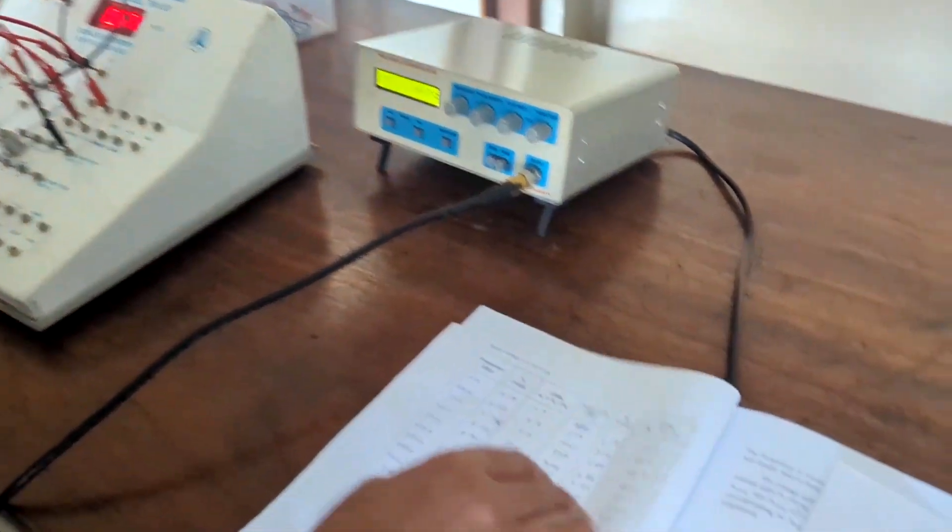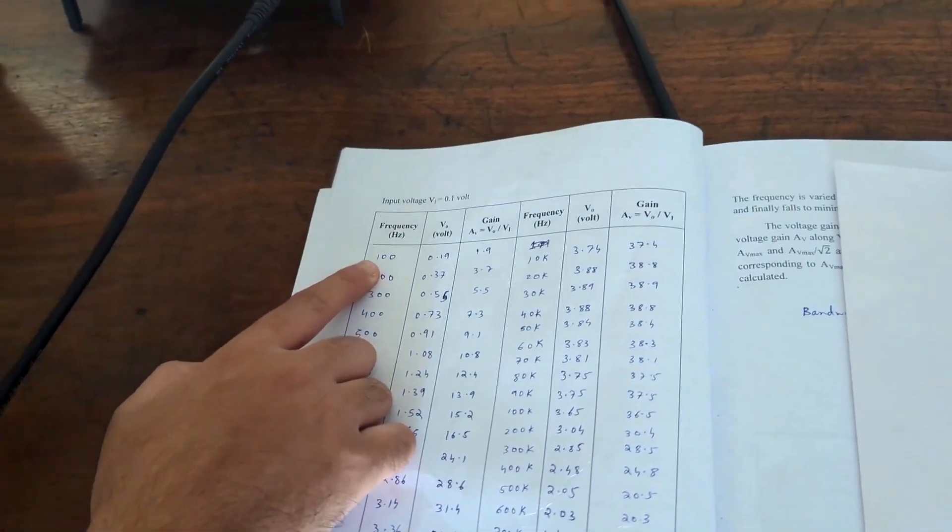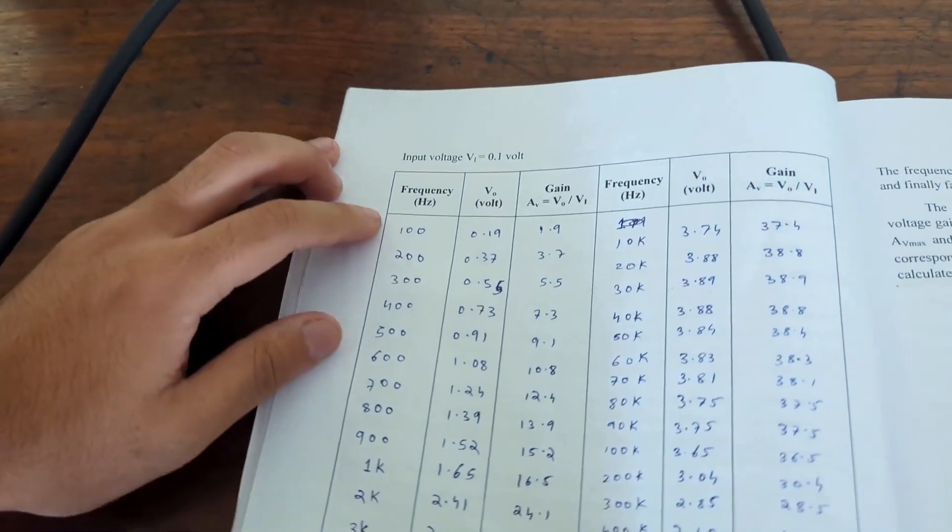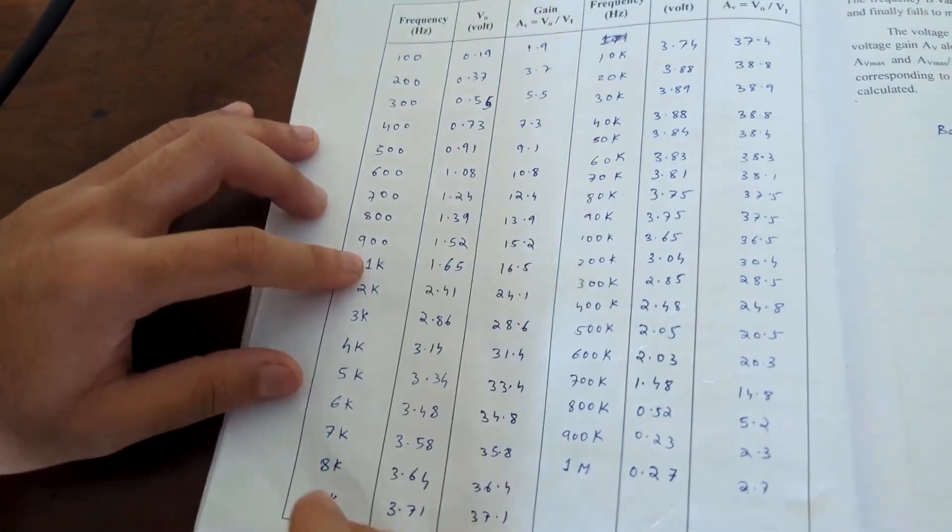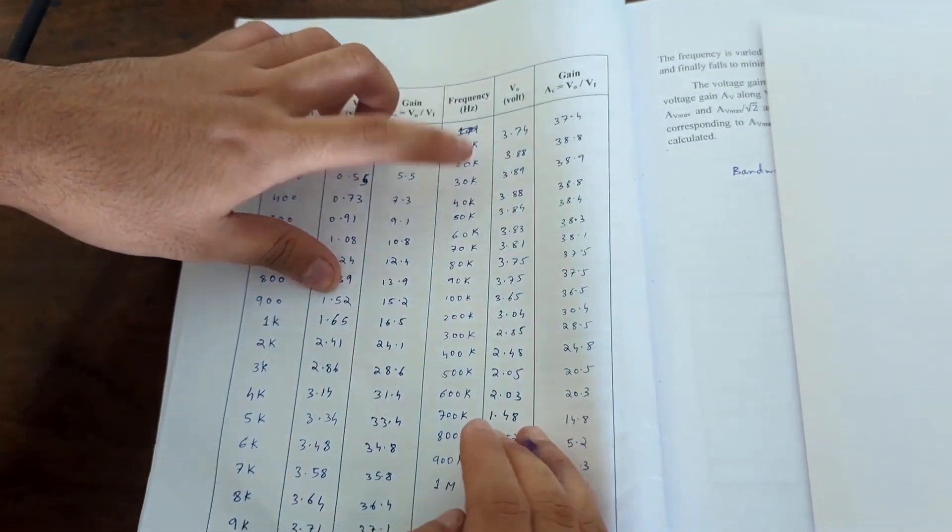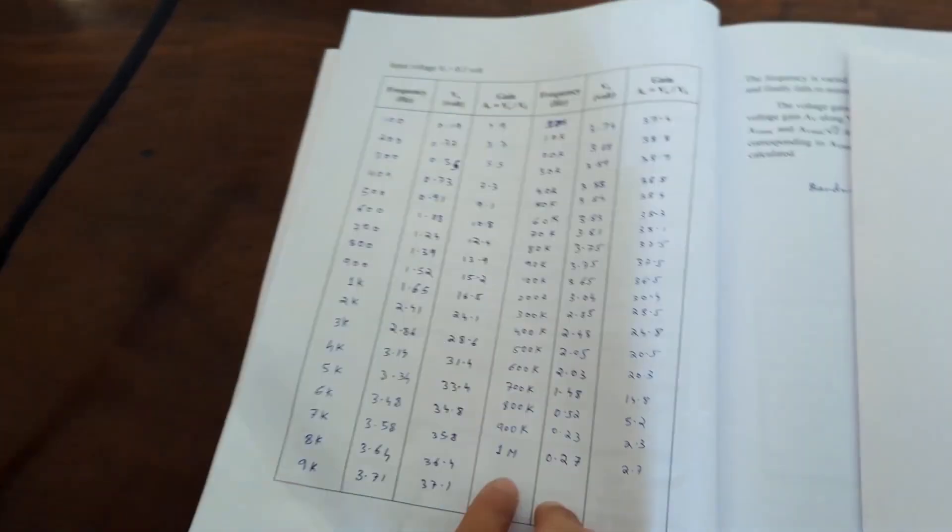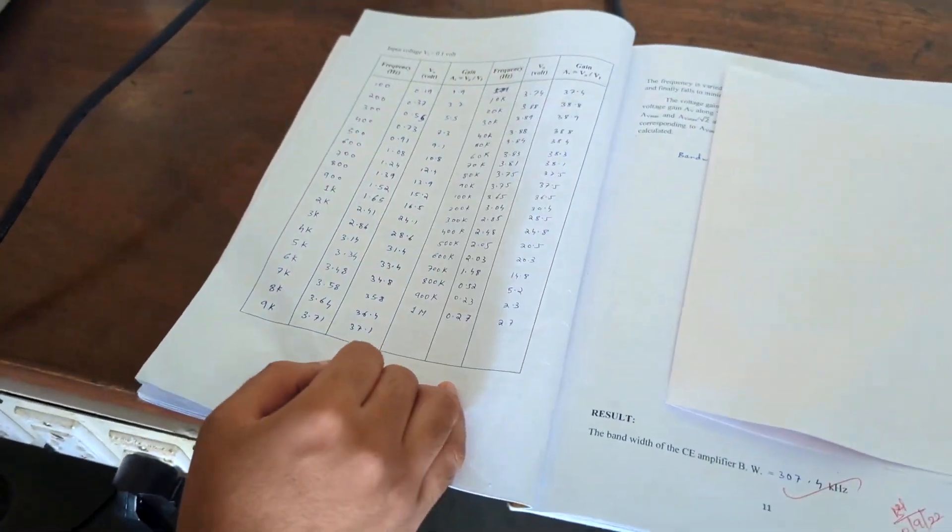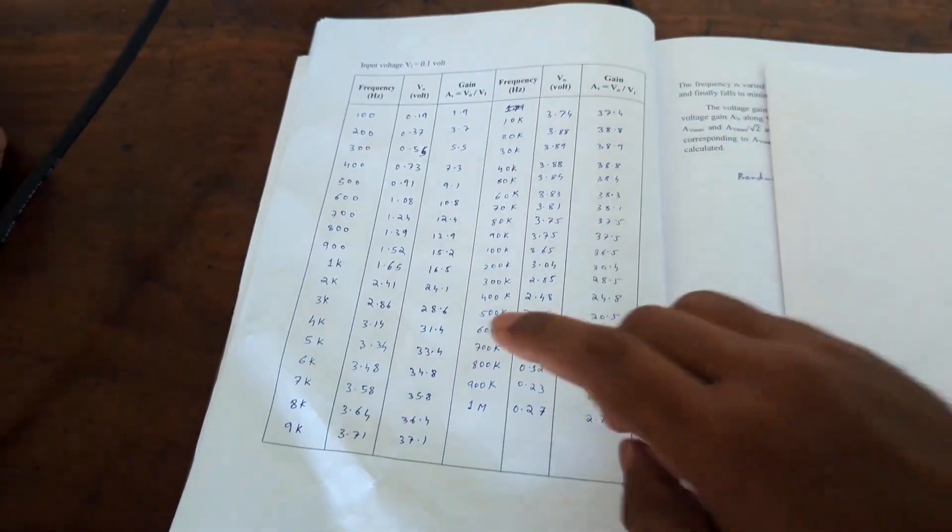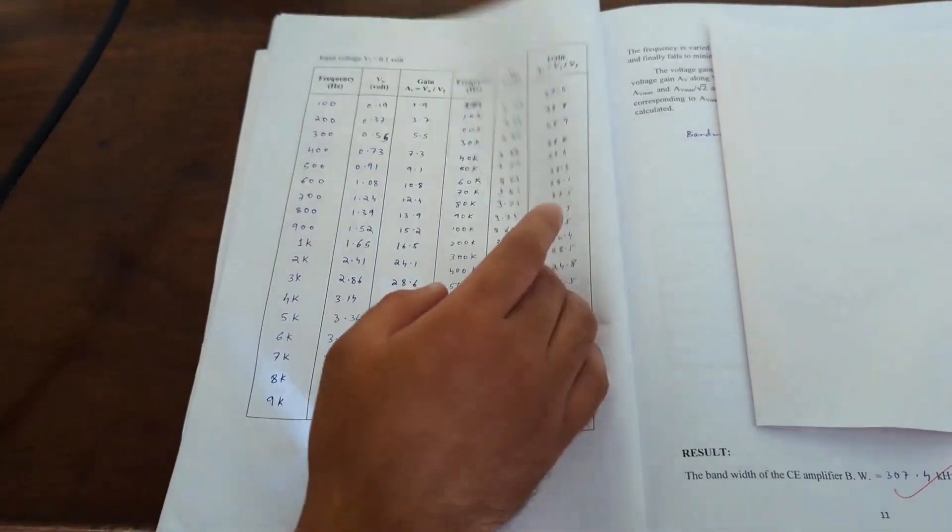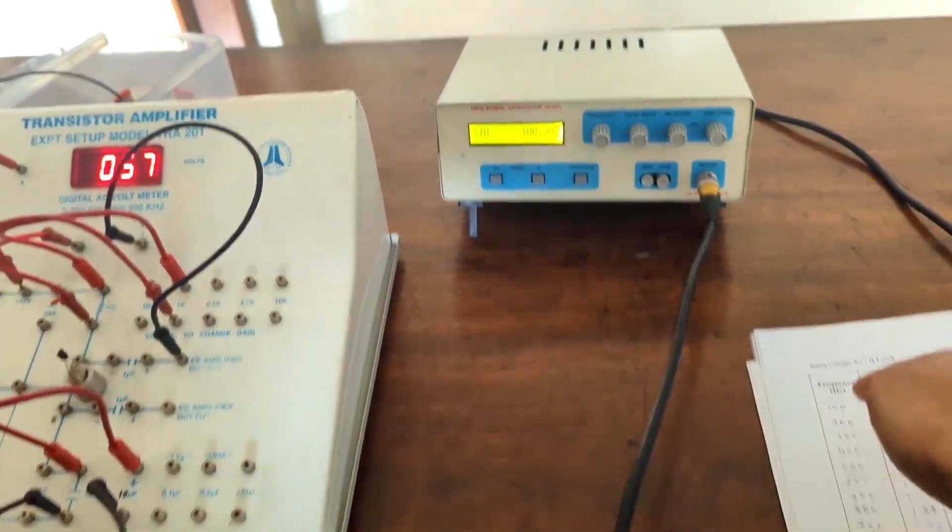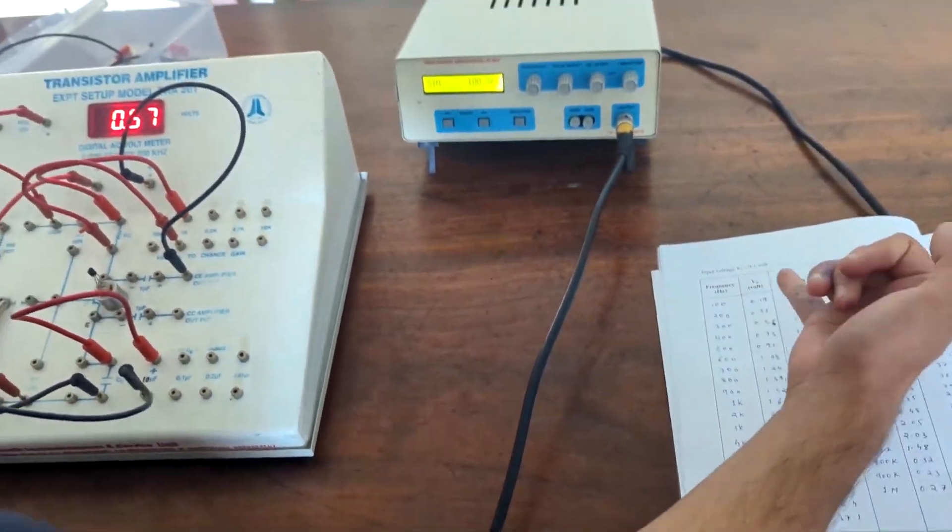So now you switch it on and then start from 100 frequency and then take down the voltage. Output voltage. So first you take in range of 100 Hz until 1k. Then you take in the range of 1000 up to 10k. Then 10,000. Then 100,000. So you go till 1 MHz. So that is 1000 kHz. So you take the output voltage by changing the frequency like this. This way you get the output voltage.